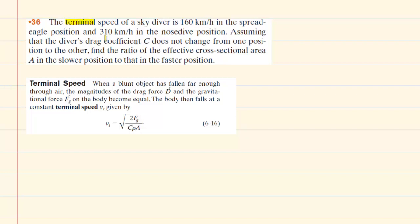This question deals with the terminal speed of a skydiver, and we know we can calculate the terminal speed of an object by using this equation. The terminal speed is equal to the square root of 2 times the gravitational force of the object divided by a drag coefficient c, times the air density times the cross-sectional area of the object.